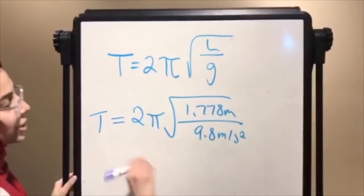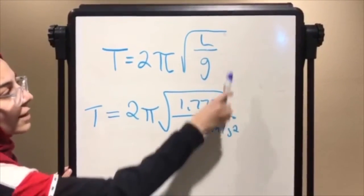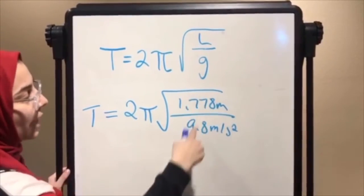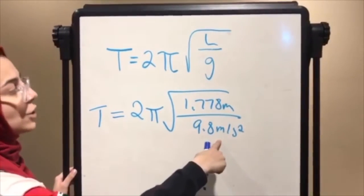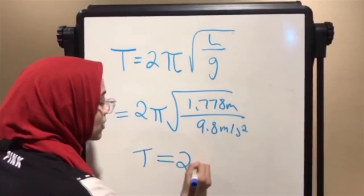We use the equation by plugging in 1.778 meters for the length of the chain and then 9.8 meters per second squared for G. The total for T in seconds is 2.68.